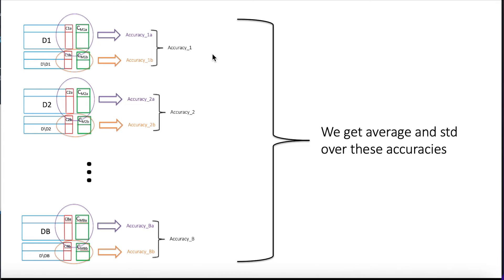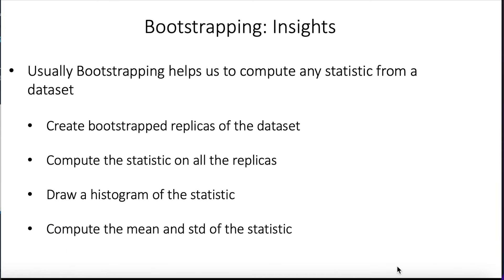So at the end, what we obtain is B different accuracies that we can average them. Recall that each accuracy was using the 0.632 and 0.368 numbers to average these two accuracies.